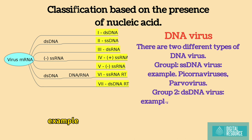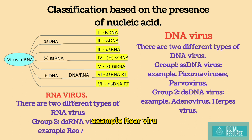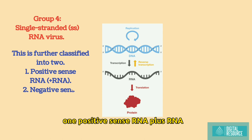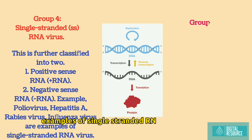RNA virus. There are two different types of RNA virus. Group 3: double-stranded RNA virus, example: Reovirus. Group 4: single-stranded SS-RNA virus. This is further classified into two: 1. Positive sense RNA (plus RNA), 2. Negative sense RNA. Example: poliovirus, hepatitis A, rabies virus, influenza virus are examples of single-stranded RNA virus.